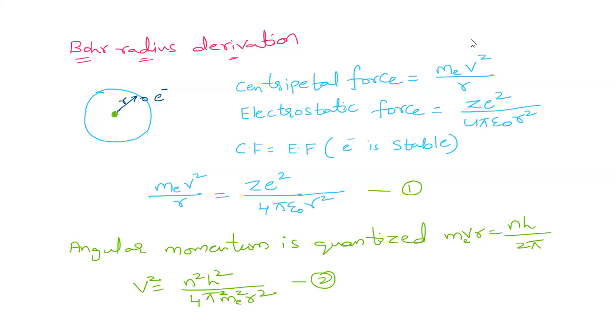There is centripetal force whose value is MeV² by R. The electron is stable in this orbit because it is balanced by these two forces. As these two forces are equal, it is balanced. So we can equate these two equations here.